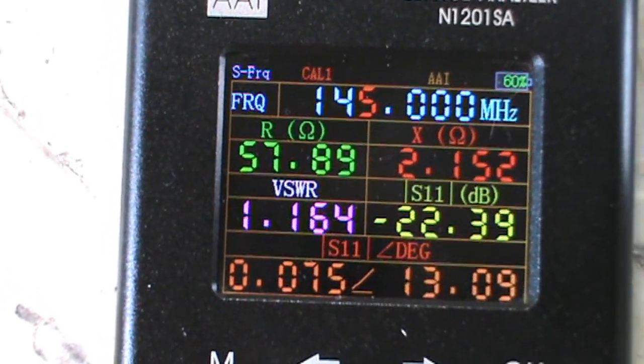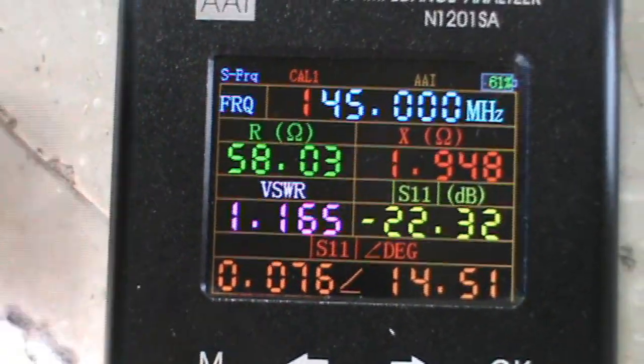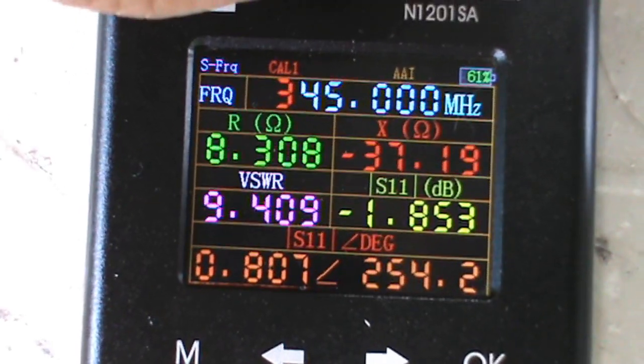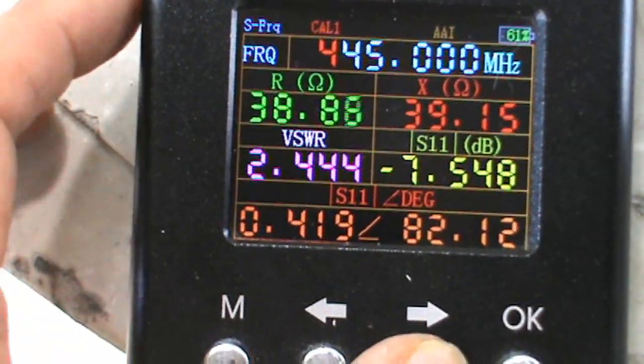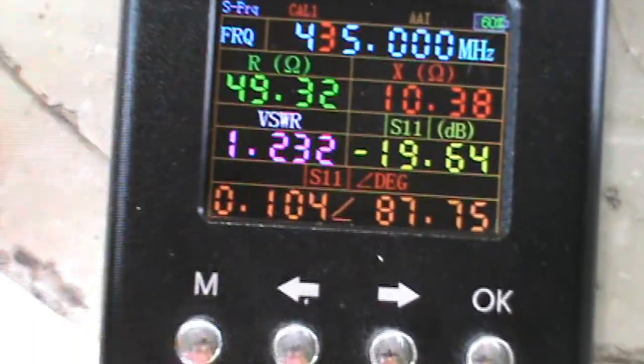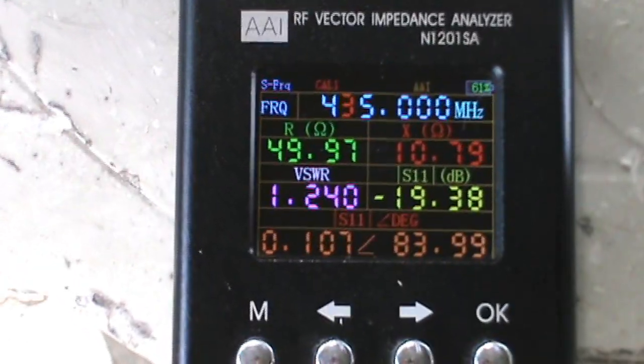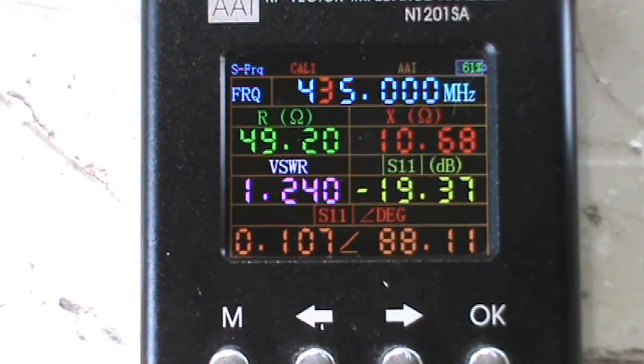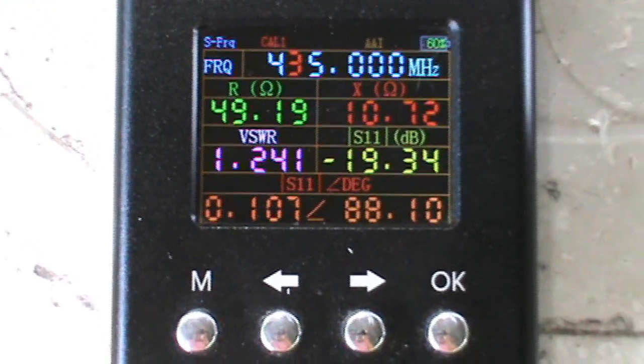Let's check the UHF side. 435 MHz is 1.2, the complementary frequency.